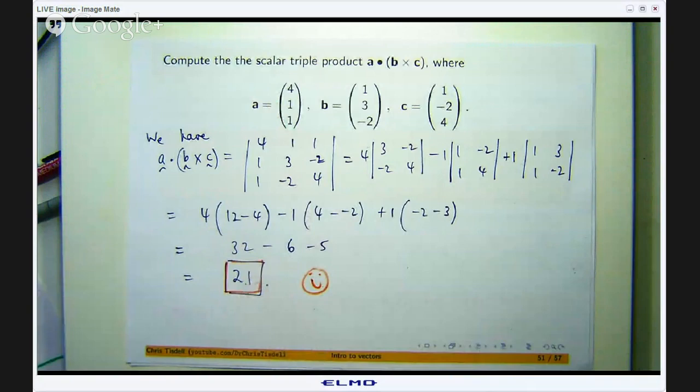So we have computed the scalar triple product of these three vectors a dot (b cross c) and we have a number. Now in forthcoming videos I am going to show you the geometric significance of that result. And like I hinted at before, just like the cross product can be used to compute area of parallelograms, we can use this scalar triple product to compute the volume of parallel pipeds with bases that are parallelograms. Okay, so that will be the next video in this series. So I hope you can join me then. If you have any comments or questions, put them in the comments section. Thanks again for watching, see you later.